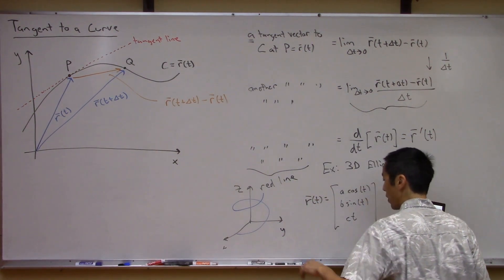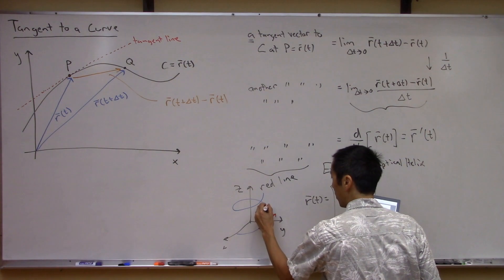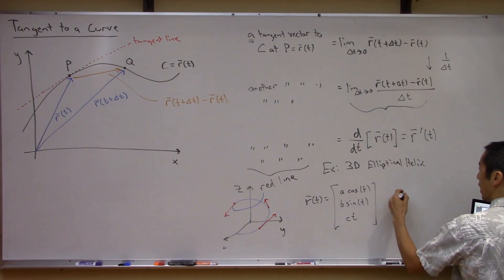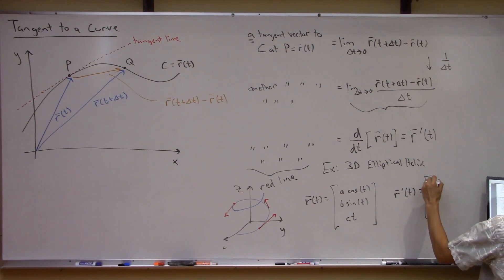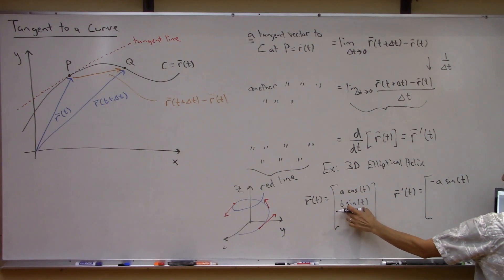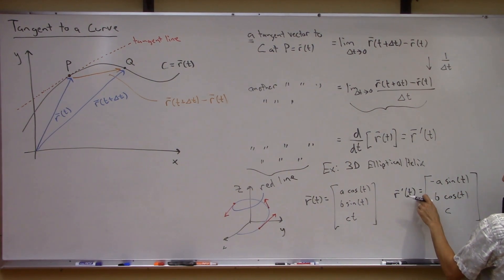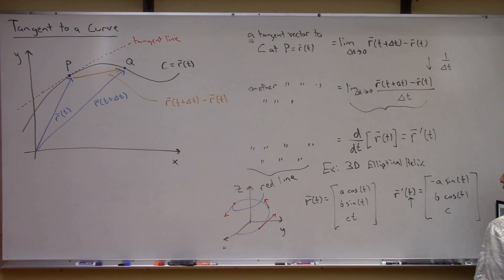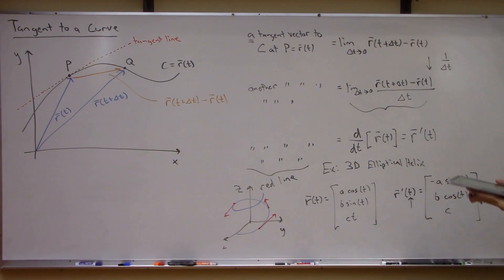So now we can ask: how do I find the tangent to this curve at any point? Apparently all we have to do is compute R prime of T — take the derivative of each element with respect to T. The derivative of A cosine T is minus A sine T, the derivative of B sine T is B cosine T, and the derivative of C times T is just C. So this vector describes the tangent at any point along the curve, as long as you know the value of T.